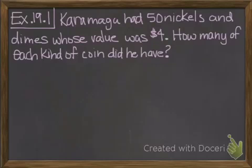Karamagu had 50 nickels and dimes whose value was $4. How many of each kind of coin did he have? For value problems you have two different types of equations that you're going to use, and it's always going to be this way. The first equation is a number equation and the second one will be a value equation.